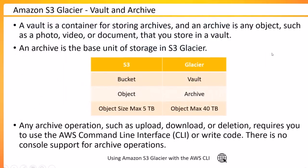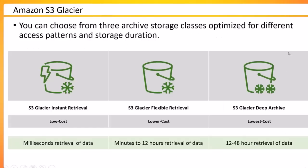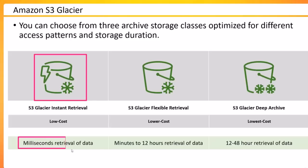Within Glacier, there are tier-based options called Glacier storage classes. There are three storage classes with different optimizations for access patterns and storage duration. The first is Glacier Instant Retrieval. As the name says, it is for data you want to keep but need to retrieve instantly with millisecond retrieval time. This is a relatively new offering from the Glacier service.